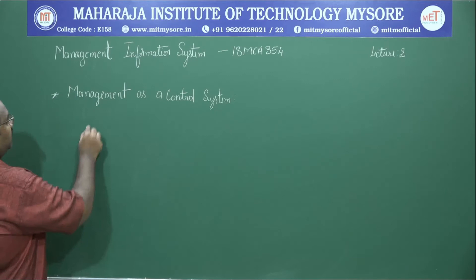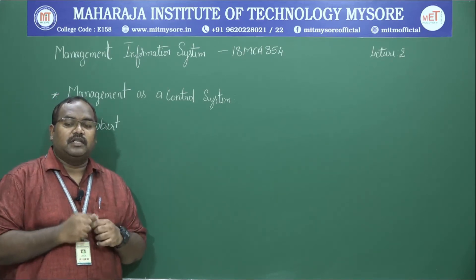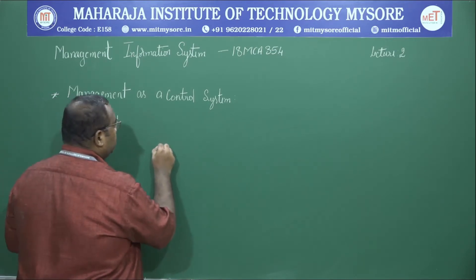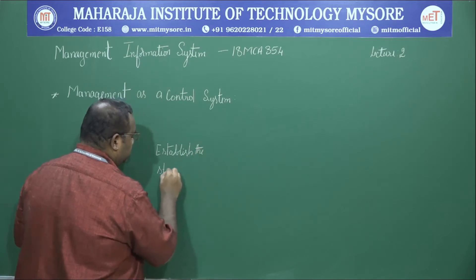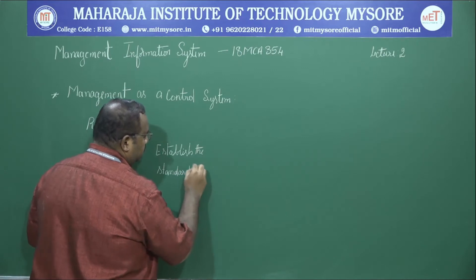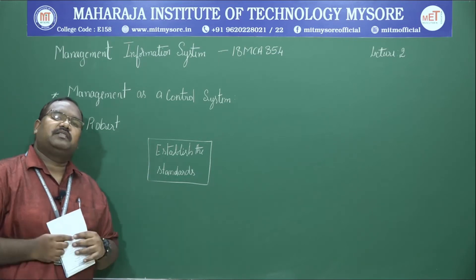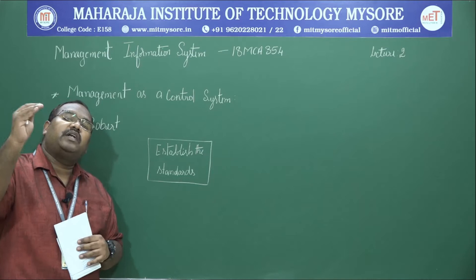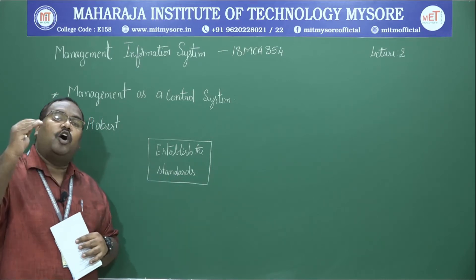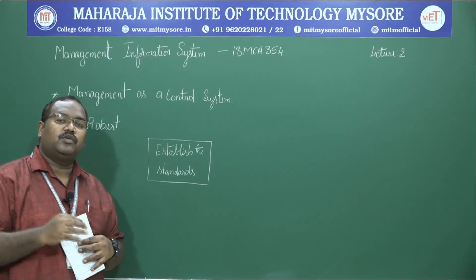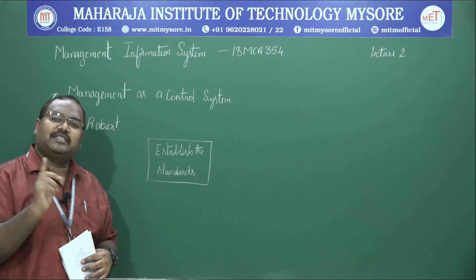Robert has defined the management control procedure. Let us look at those things with the help of a diagram. The first entity in management control is to establish the standards — when you want to control, you need to know what to control, where to control, and what the benchmark is. Fix the standards, fix the optimal targets you want to reach, so you can monitor whether you are moving toward or deviating from the target.